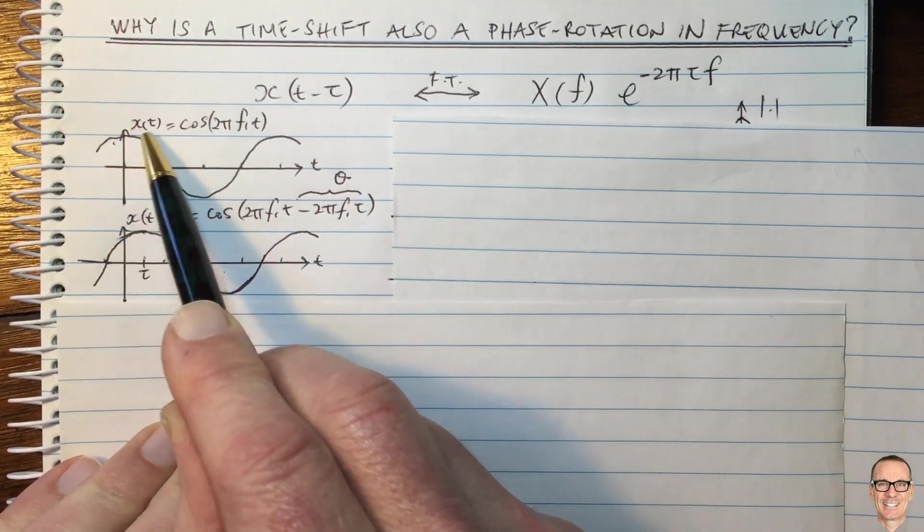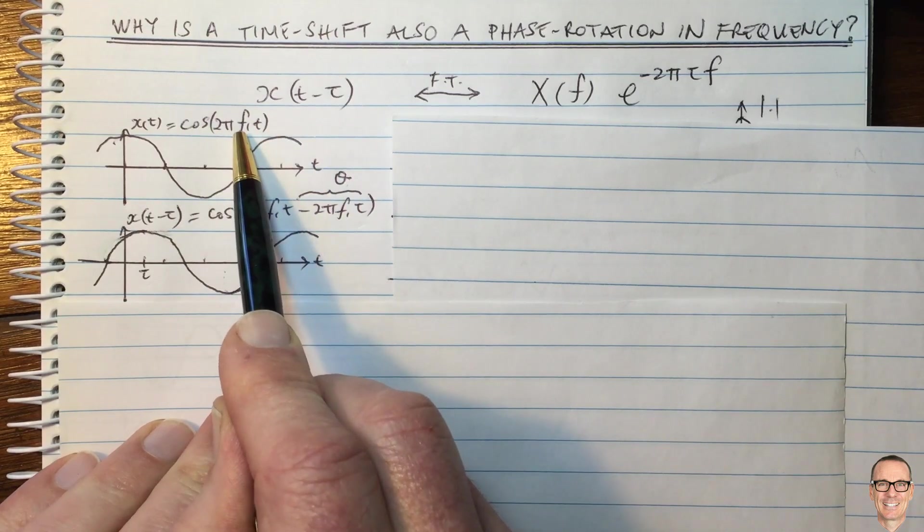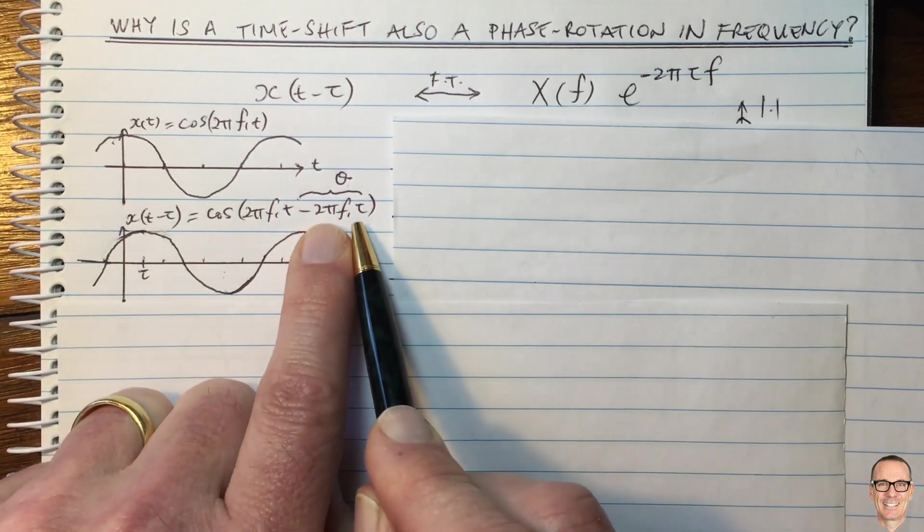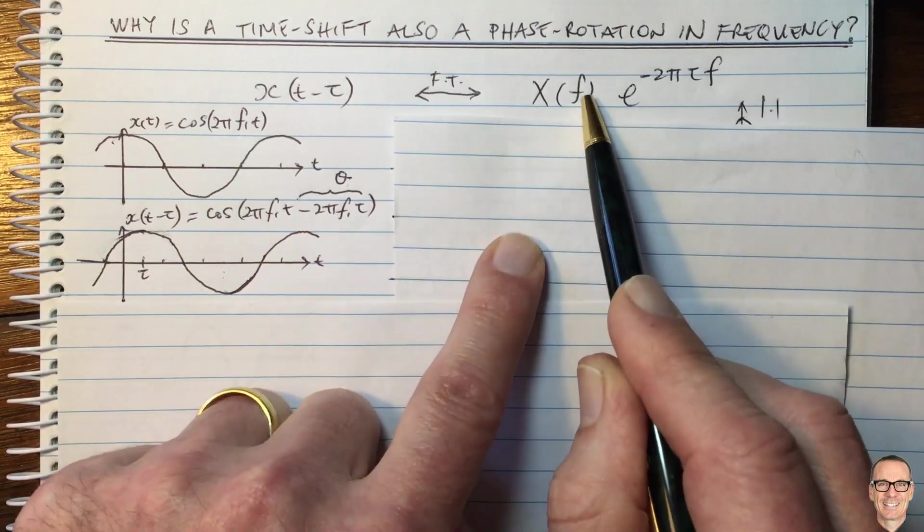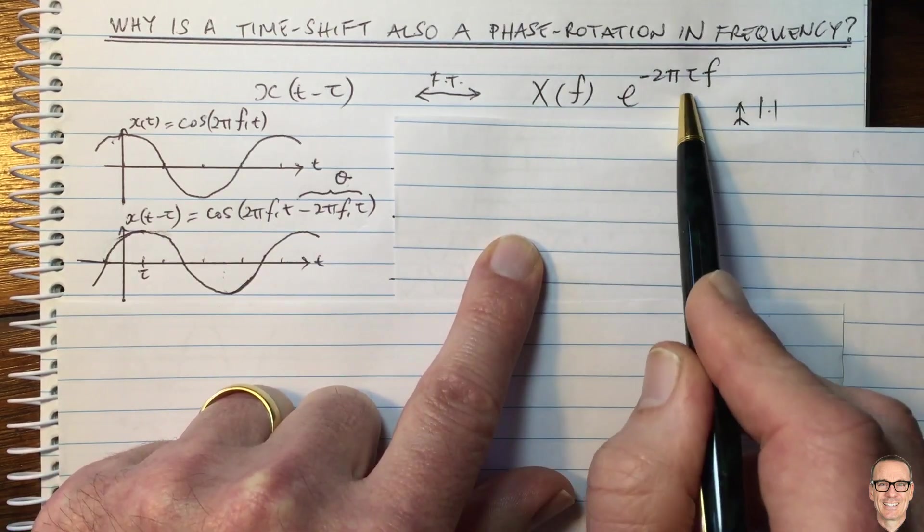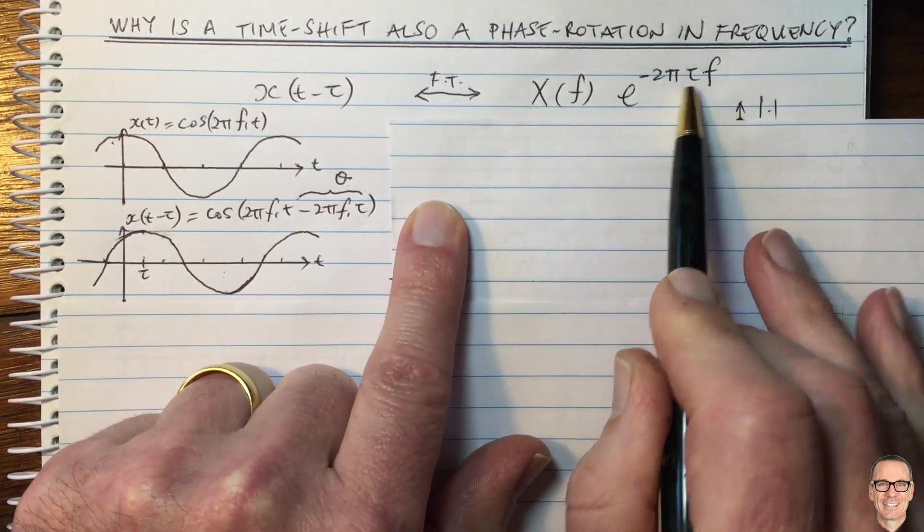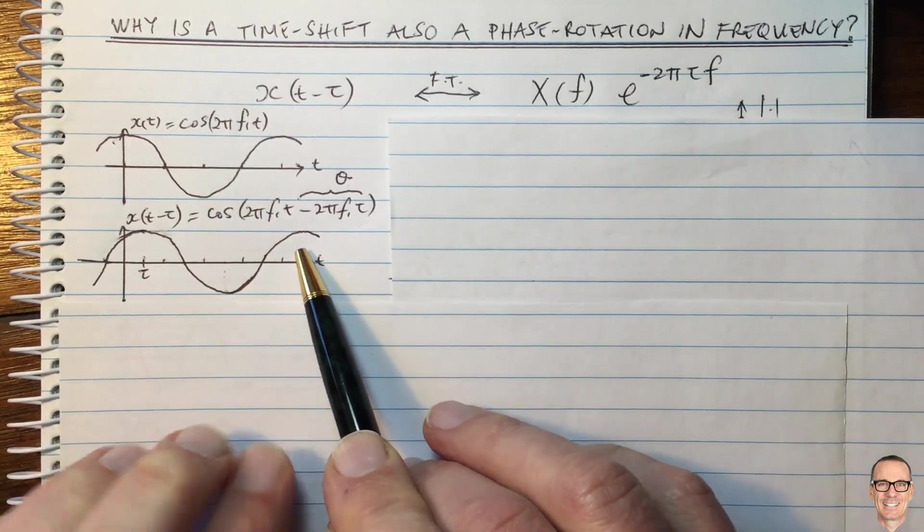So for this cos waveform at this particular frequency, the time shift gives a phase rotation. So that matches up with what the equation tells us from Fourier transform. So let's try and see if this generalizes, which of course it does.